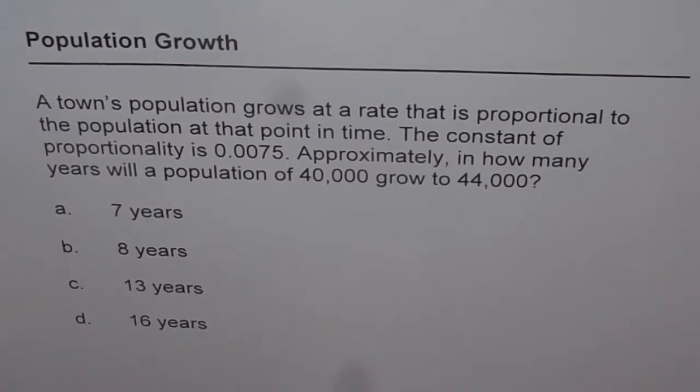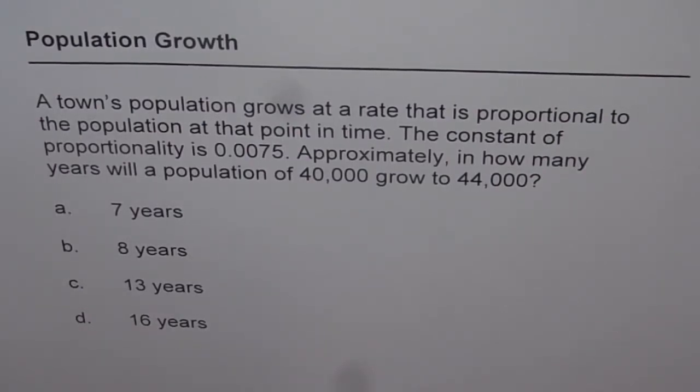Here is the solution for the population growth problem. The question is: a town's population grows at a rate that is proportional to the population at that point in time. The constant of proportionality is 0.0075. Approximately, in how many years will a population of 40,000 grow to 44,000?